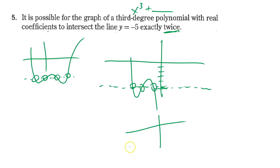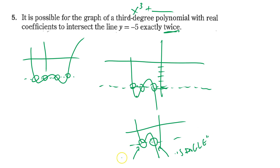With a regular cubic that goes through a line three times, can we move it up or down until it just touches twice? Yes — if we scoot it up until it just touches the line y = -5, it would touch once (a single root) and bounce at another point (a double root). Since it just bounces there, it touches exactly twice, so this statement is also true.